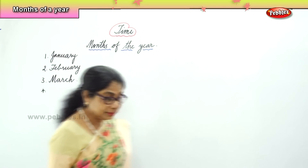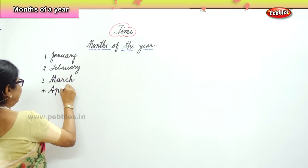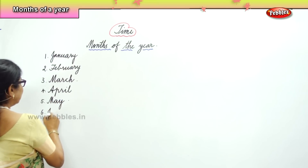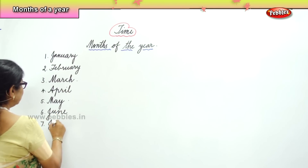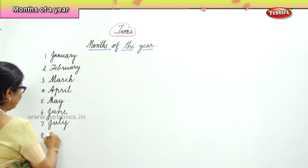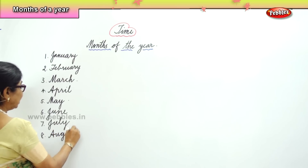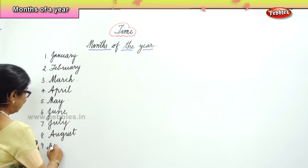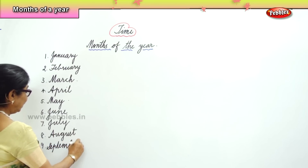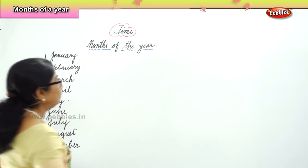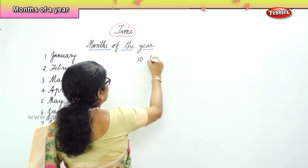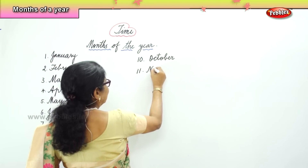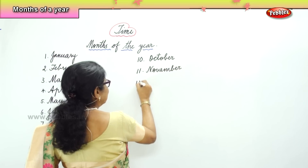The fourth month of the year is April. And the fifth month of the year is May. And the sixth month of the year is June. Seventh month of the year is July. Eighth month of the year is August. A-U-G-U-S-T. And the ninth month of the year is September. Then the tenth month of the year is October. And the eleventh month of the year is November. And the last month of the year is December.